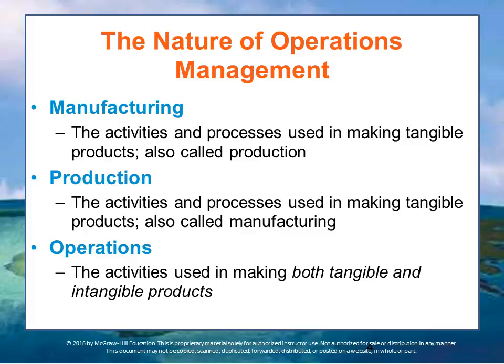Manufacturing and production refers to tangible products, whereas we use the broader term operations to describe not only those processes but also tangible and intangible products, such as services. Manufacturing provides tangible processes, while operations provides intangibles as well, such as a hotel stay or airline travel.